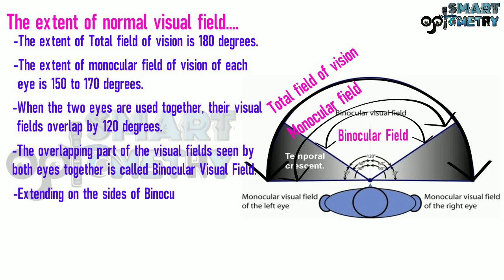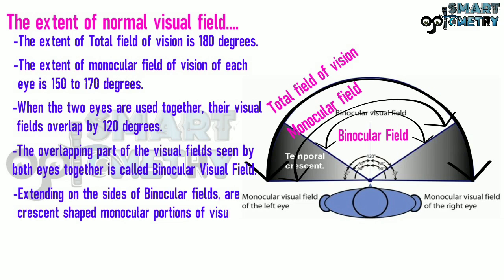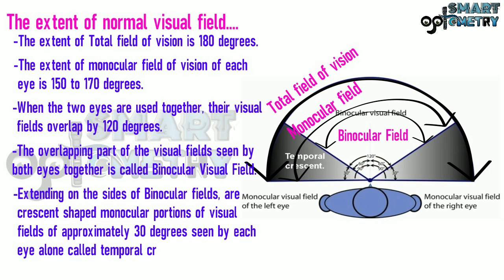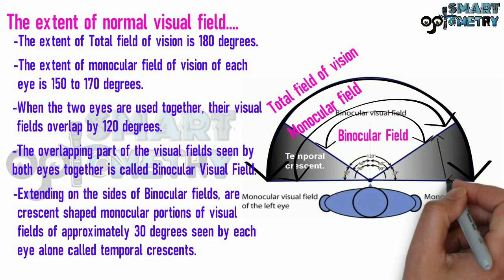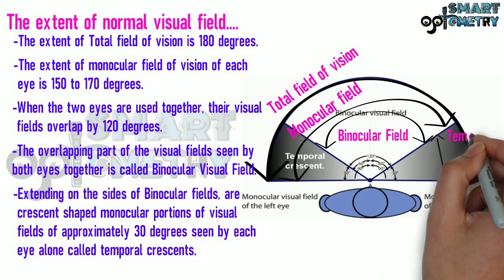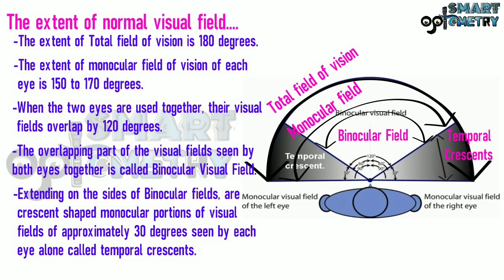Extending on the sides of the binocular fields are crescent-shaped monocular portions of the visual fields of approximately 30 degrees, seen by each eye alone, called temporal crescents. Here at the sides, you can see the temporal crescents.